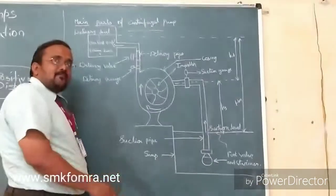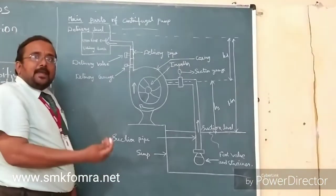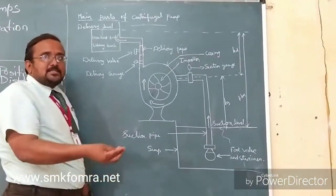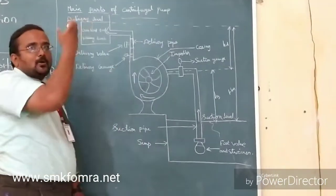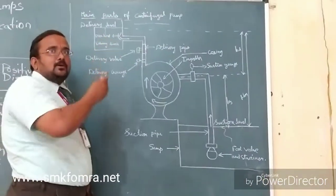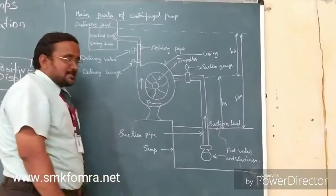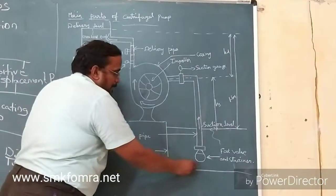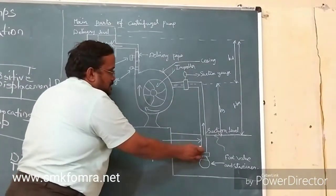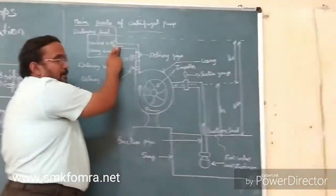At home we have overhead tank. We supply water from the ground level. The water is pumped from the sump to the overhead tank located two or three floors above the building. We will use centrifugal pump in such cases. The sump is located at the bottom of the building. There is a suction pipe and a delivery pipe.